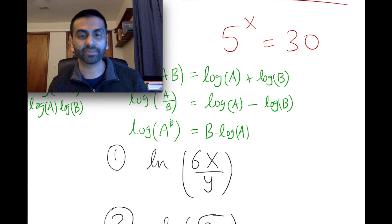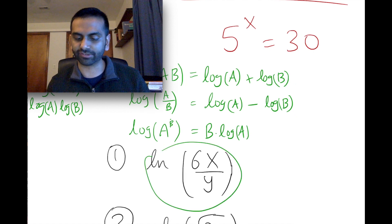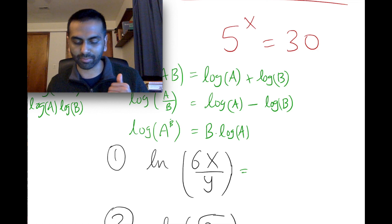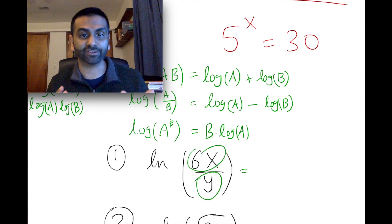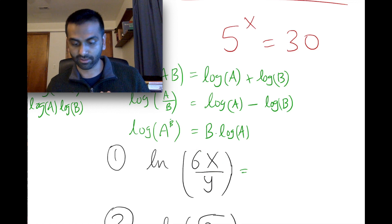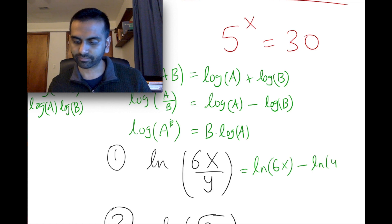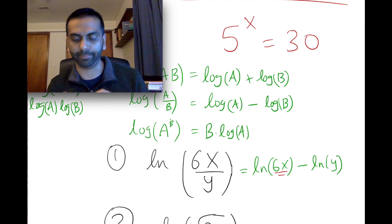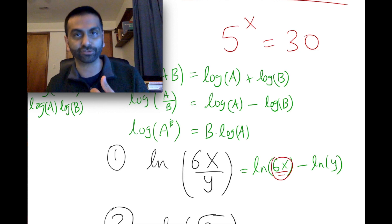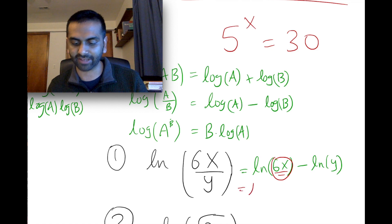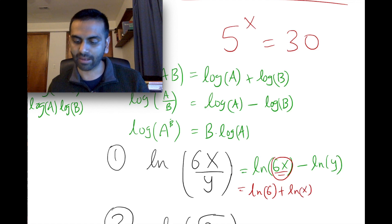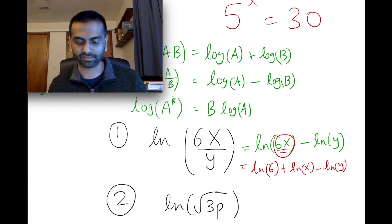Now let's put these into practice. Looking at this first problem, we want to expand it. The first instinct is that this is something divided by something else, so we use the second rule: log of a over b equals log of the first minus log of the denominator — so ln of 6x minus ln of y. We don't need to stop there because 6x can be further split up using the first rule: multiplication on the inside is addition on the outside. So that's ln of 6 plus ln of x, and then minus ln of y.